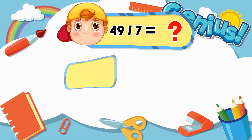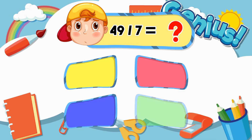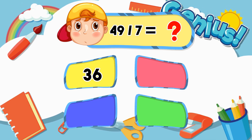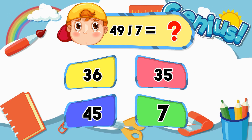What is 49 divided by 7? 37, 35, 45. The answer is 7.